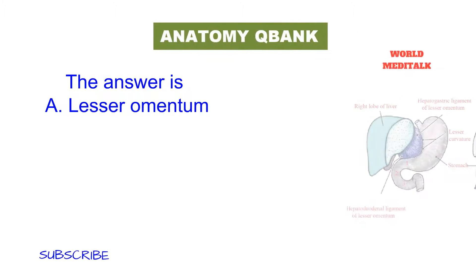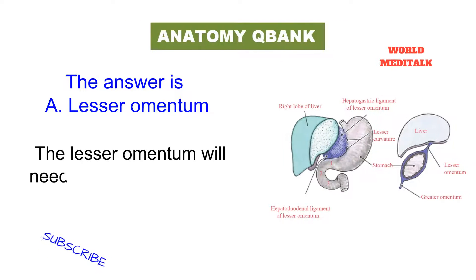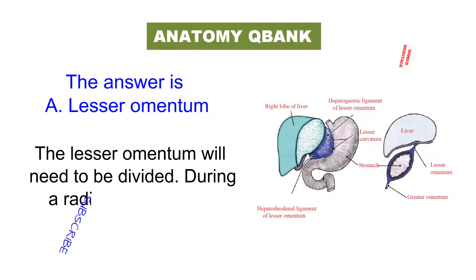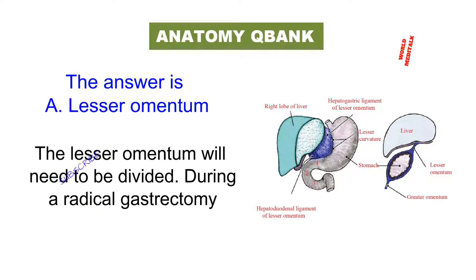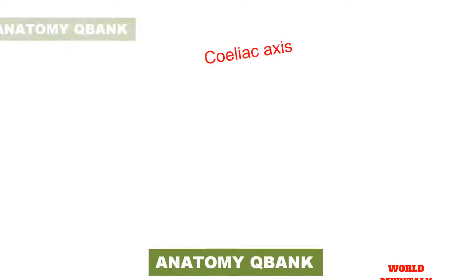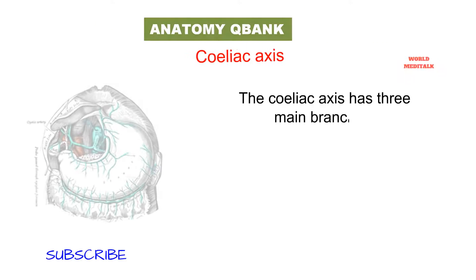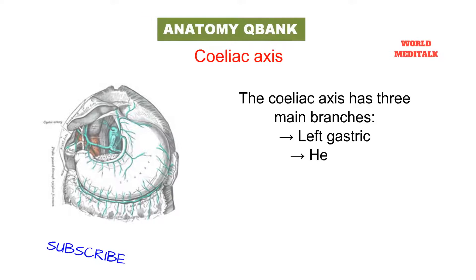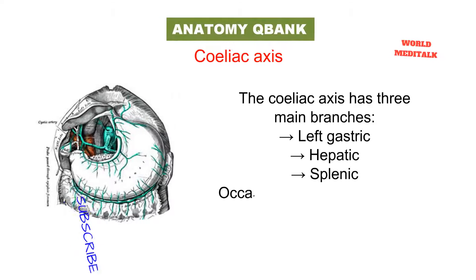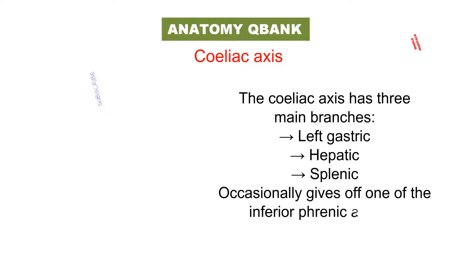The lesser omentum will need to be divided during a radical gastrectomy. The celiac axis has three main branches: the left gastric, hepatic, and splenic arteries. It occasionally gives off one of the inferior phrenic arteries.